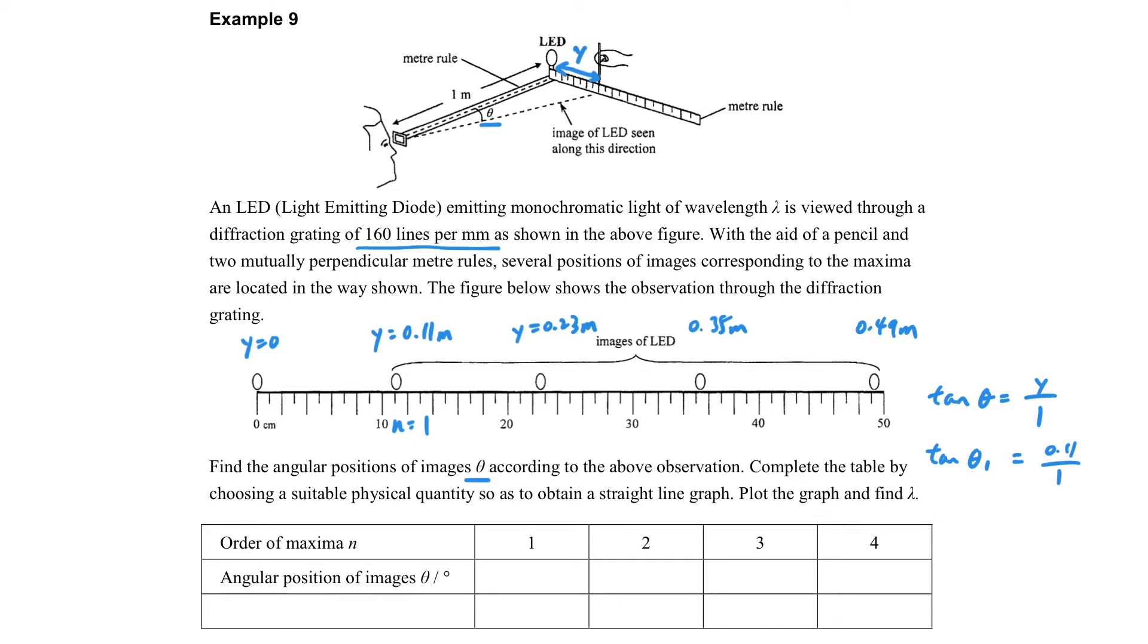By using tangent we can find out the theta, the angular position. The first space is 6.28, and then the second order, similarly we use tangent to find out their relative position. Now you should notice that there is one row missing.